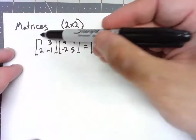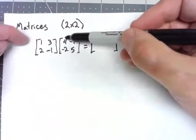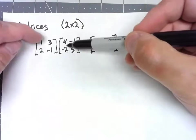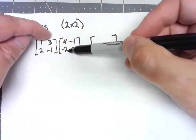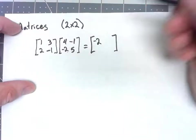When we multiply it out, we go across the first matrix, down the second one, pairing things up, and then adding the pairs. So 1 times 4 is 4, 3 times negative 2 is negative 6, 4 minus 6 is negative 2.